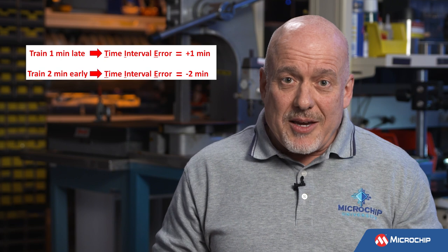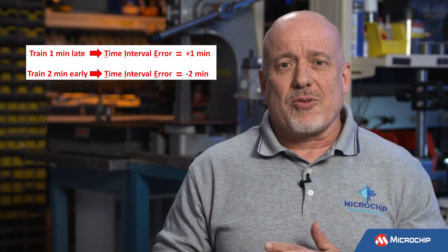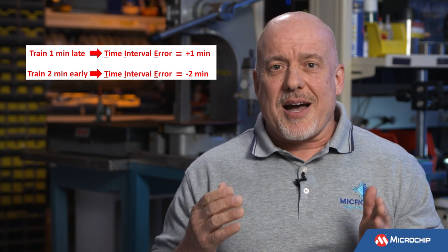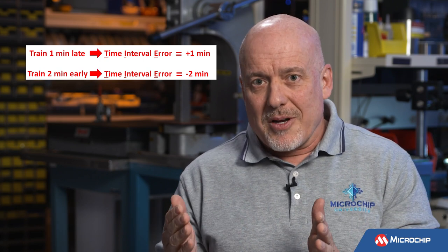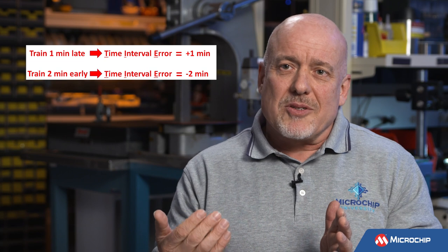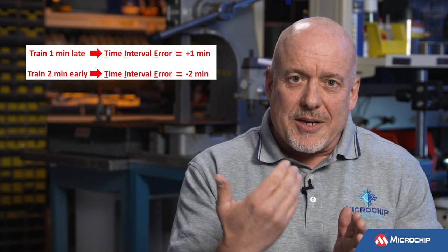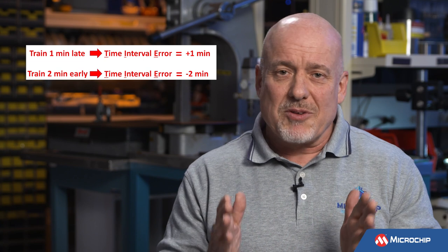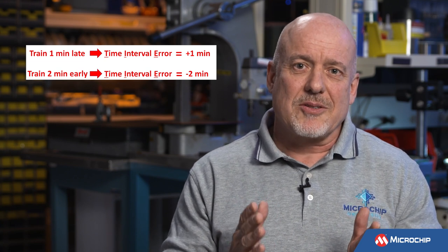Or let's say on another day the train leaves at 7:58 AM. The train has a time interval error of negative two minutes, because the train is leaving two minutes before it's scheduled to leave. If we observe a repeating event over a long period of time, we can measure and quantify the stability instead of using qualitative terms.